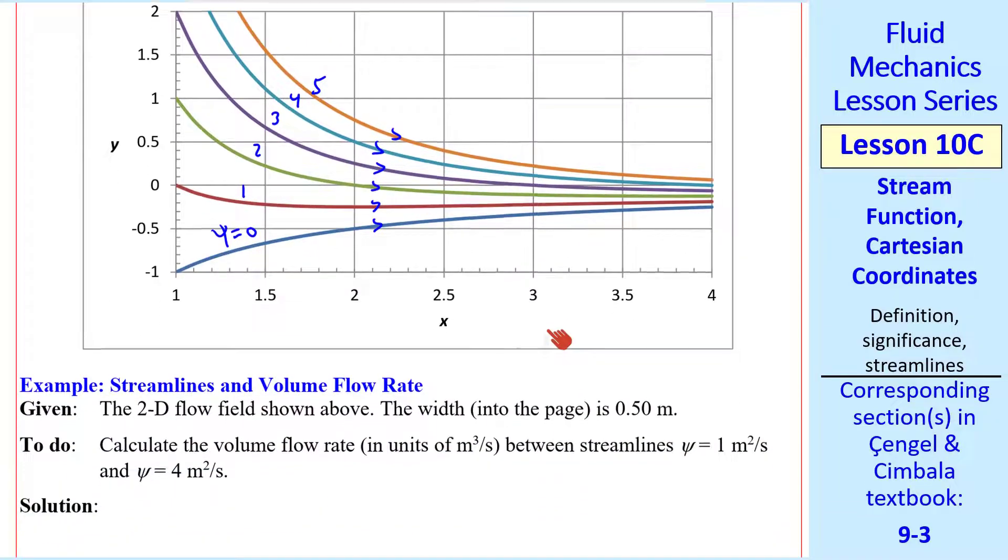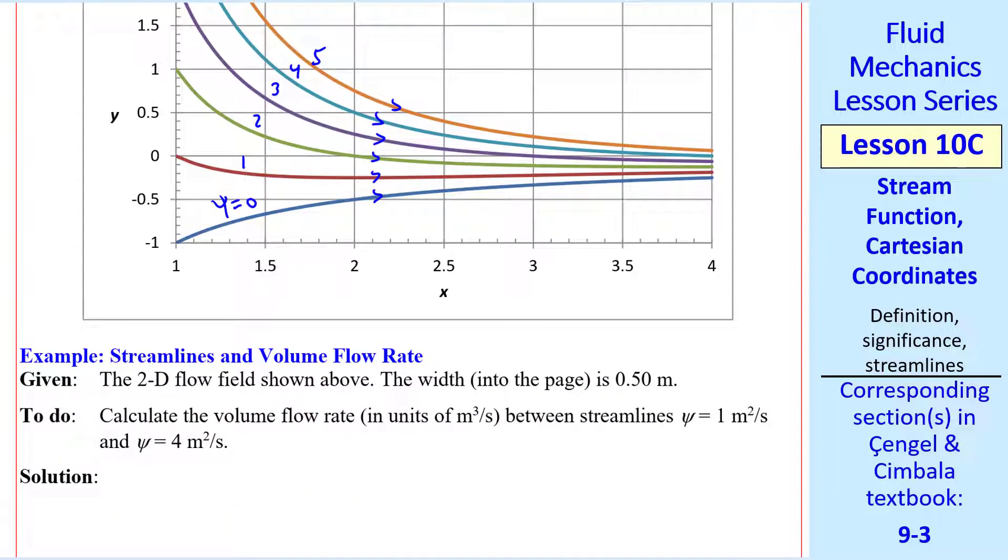Finally I'll do one more example with this problem and that is for a given width into the page let's calculate the volume flow rate in meter cubed per second between two of these streamlines. By the way the dimensions of psi are L squared over T so common units of psi are meter squared per second which is what we have here.